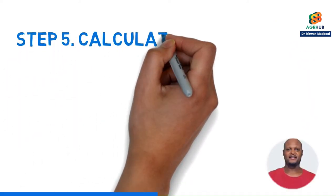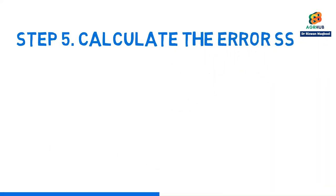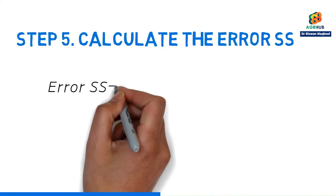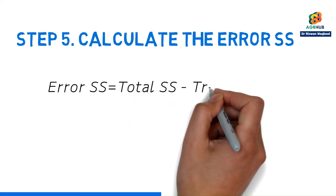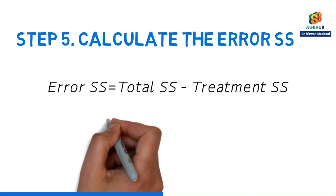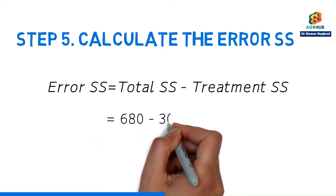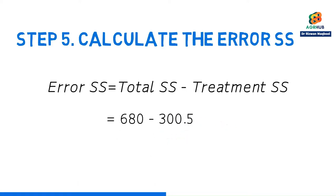Step 5. Calculate the error SS. The formula for calculating the error SS is total SS minus treatment SS. Subtract 300.5 from 680 and we get our error SS 379.5.